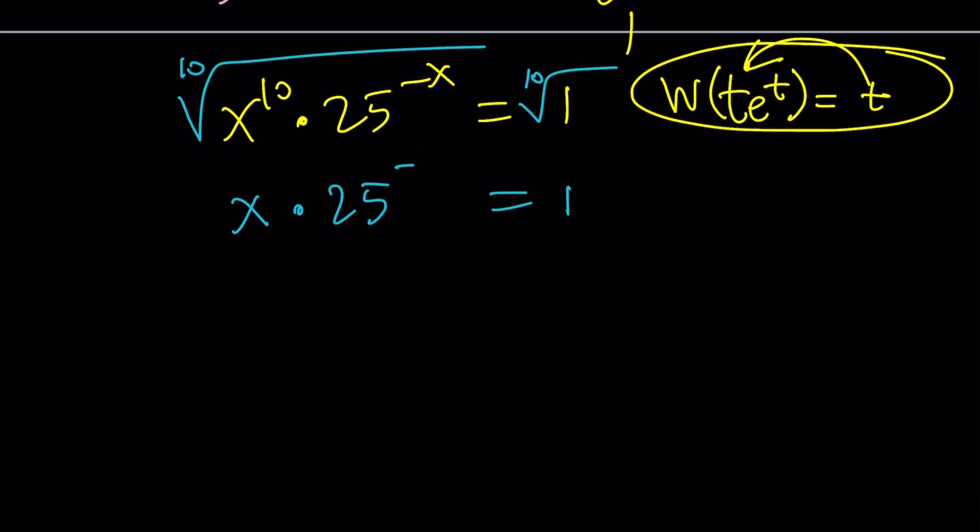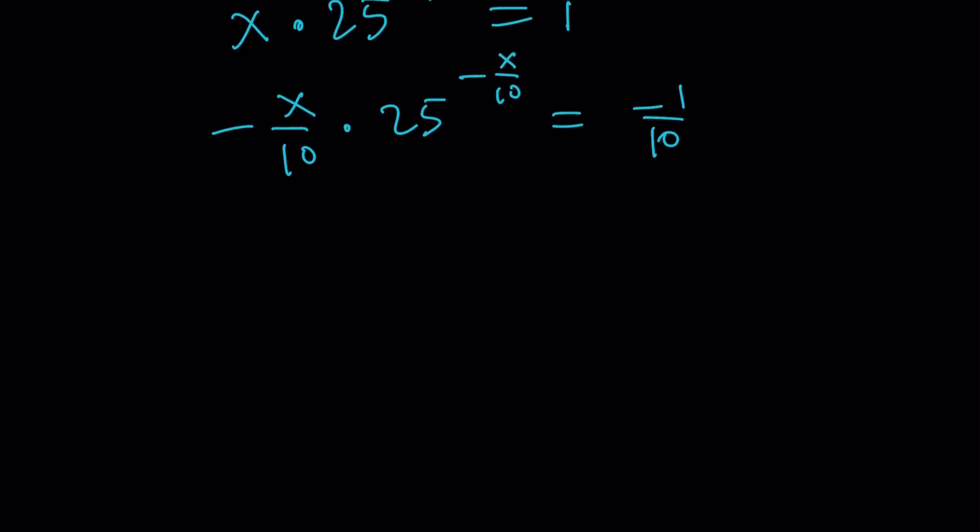So, now we have this equals 1. Again, I'm taking the positive root. You can always switch around. And now, this is going to become my almost like te to the t. Let's go ahead and multiply both sides by negative 1 10th. So, negative x over 10 times 25 to the power of negative x over 10 equals negative 1 over 10. We're pretty close, except we have to have te to the t. So, our base needs to be e. So, let's go ahead and write this as 25 to the power of negative x over 10 as e to the power ln 25 to the power of negative x over 10.